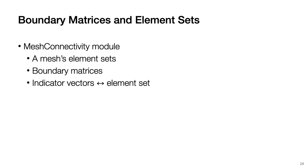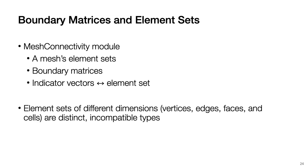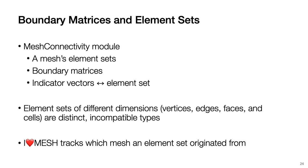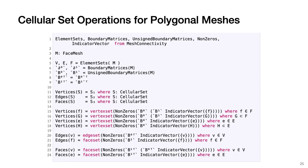The core mesh data structure in Ahad Mesh consists of boundary matrices and element sets. The built-in mesh connectivity module provides access to a mesh's element sets, boundary matrices, and functions for creating indicator vectors from an element set, and vice versa. Although element sets are all encoded as sets of integers, element sets of different dimensions are distinct incompatible types in Ahad Mesh. Moreover, Ahad Mesh checks which mesh an element set originated from. We use the term cellular set to simply mean any collection of mesh elements of possibly heterogeneous types; for example, a single cellular set might contain vertices and faces.